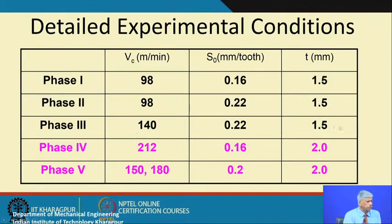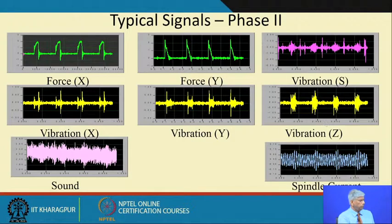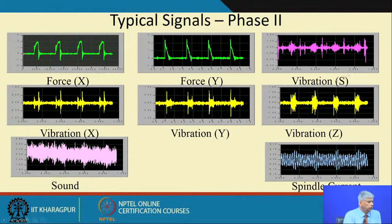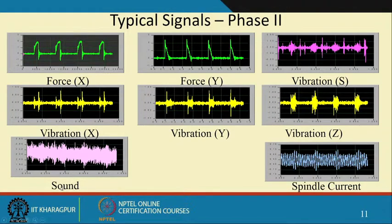For different machining conditions we captured all the machine parameters. The typical signals include: force signals, spindle vibration, machine vibration, noise signals, and the spindle current.